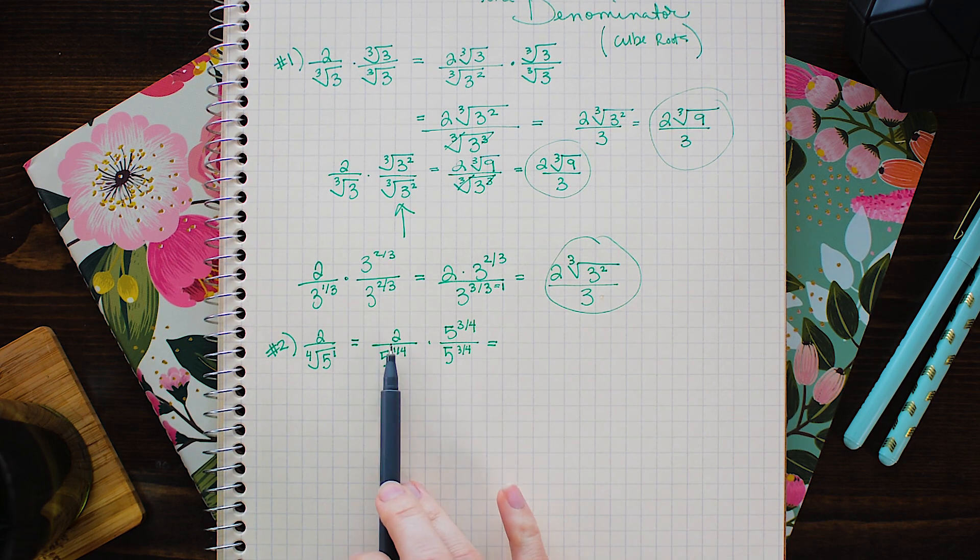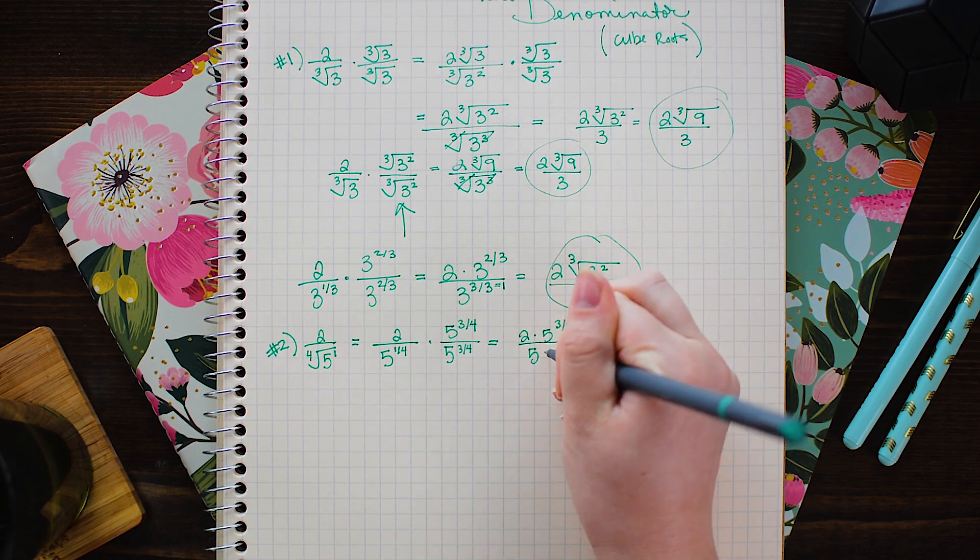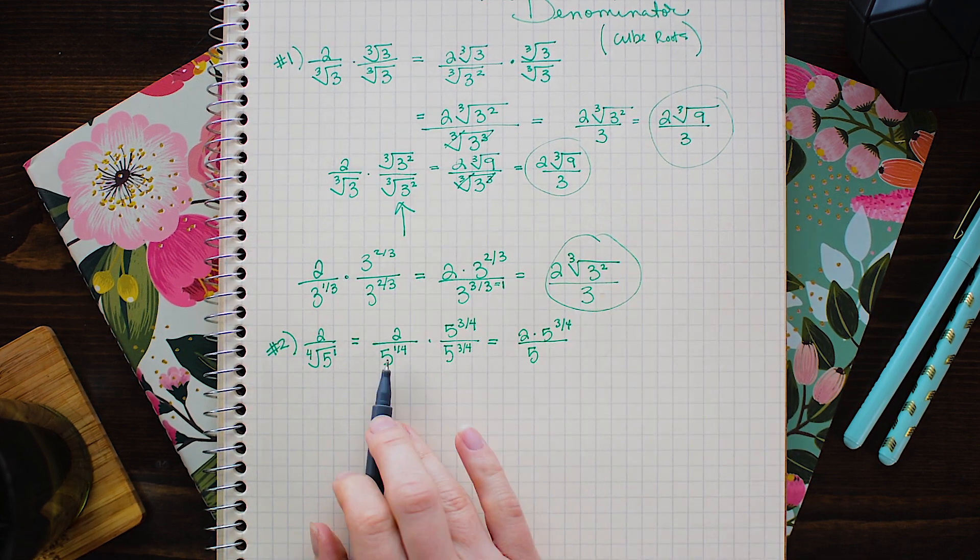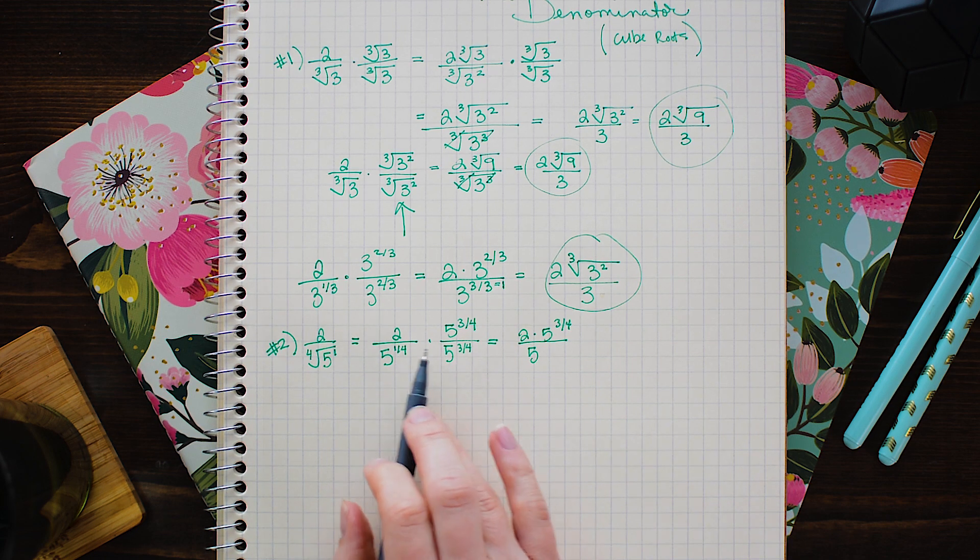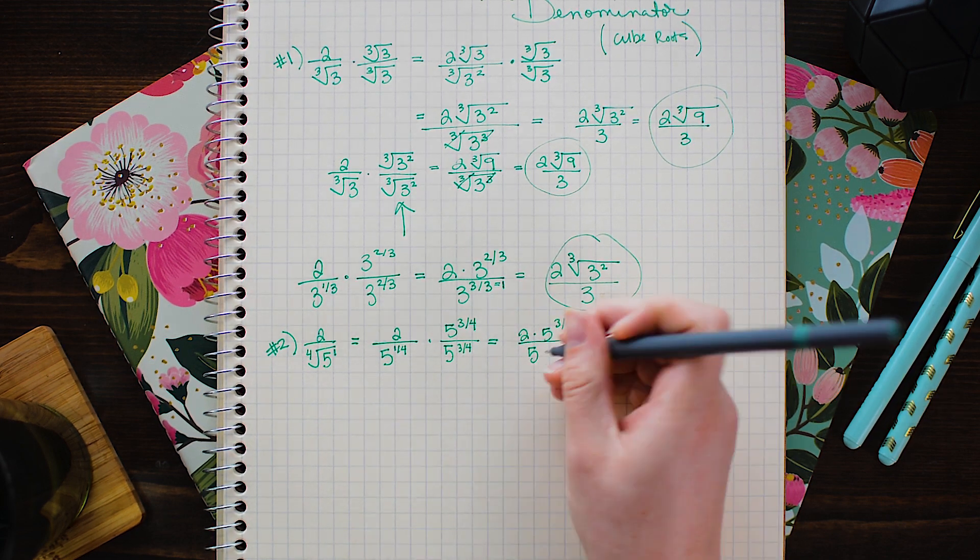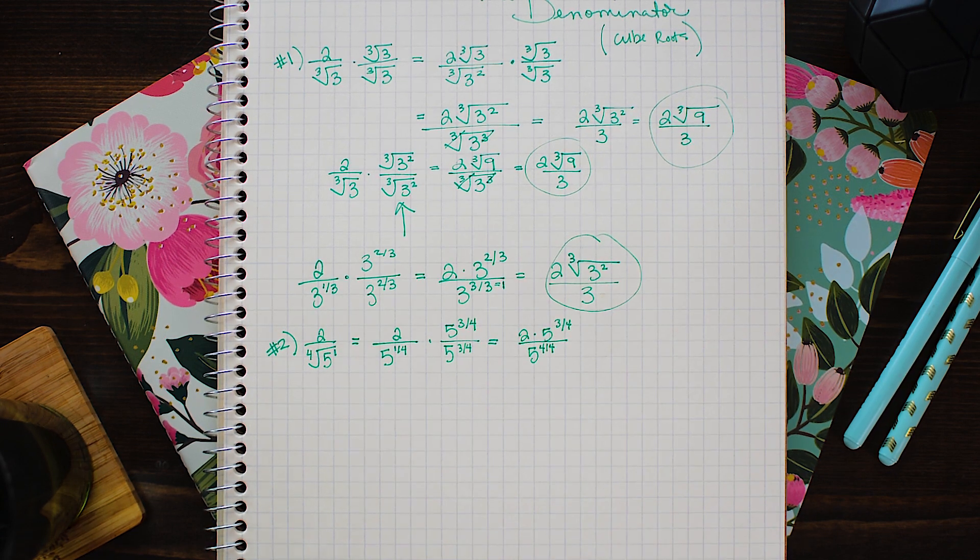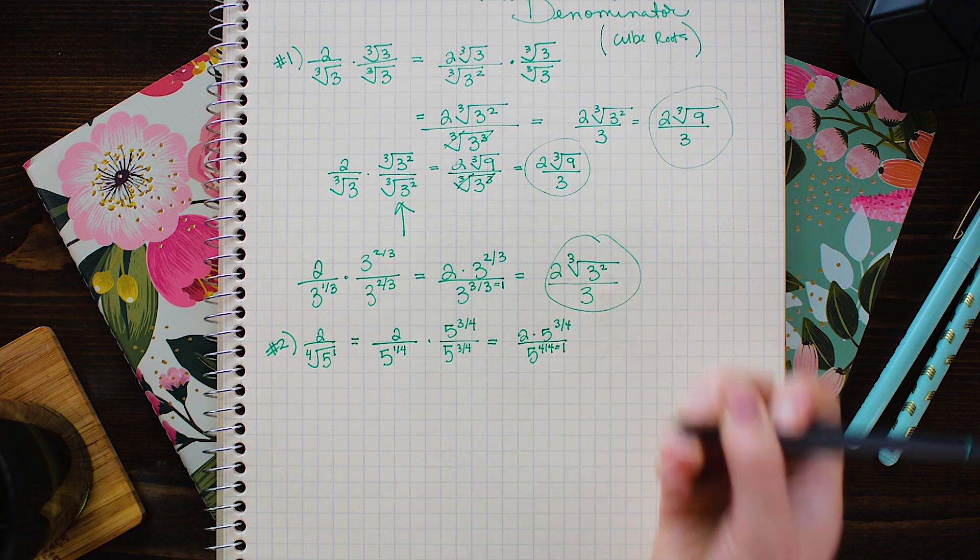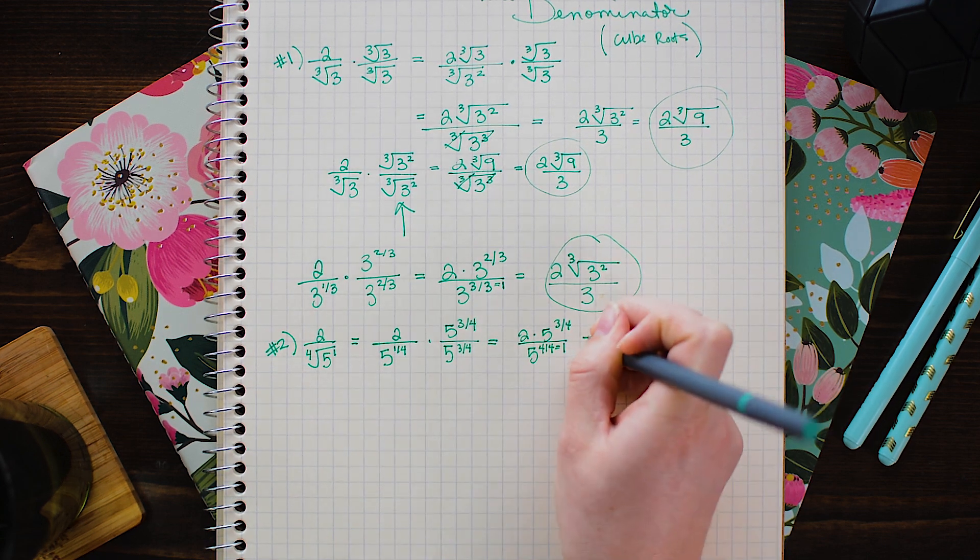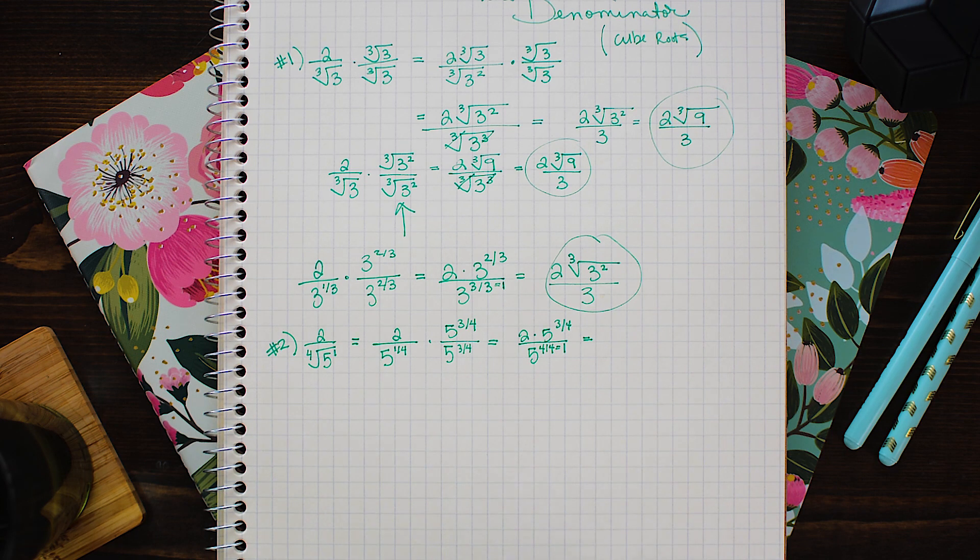So here we're going to go ahead and multiply the numerators and denominators together. And when I multiply two numbers together that have the same base I simply add the powers. So 1 4th plus 3 4ths equals 4 4ths. And 4 4ths of course is just the same as 1.